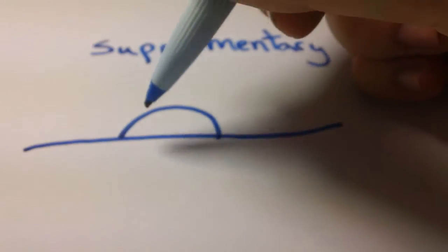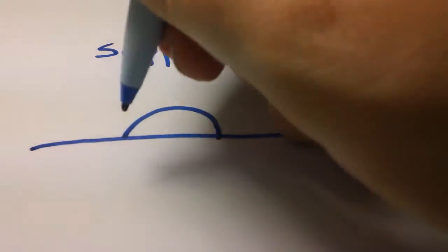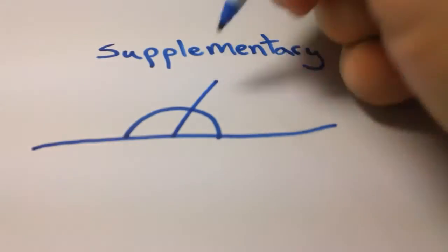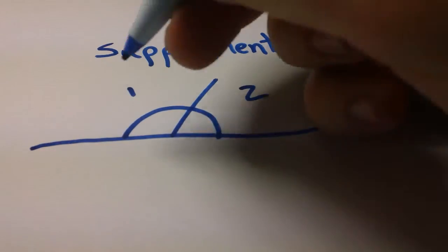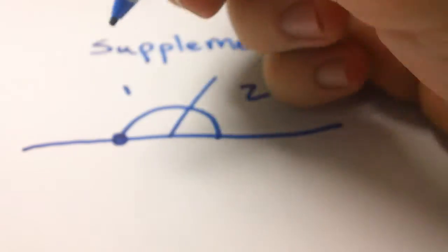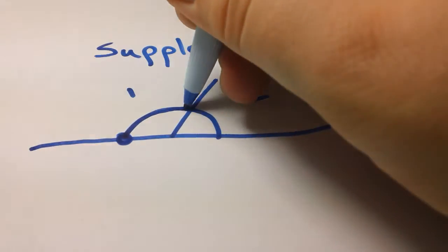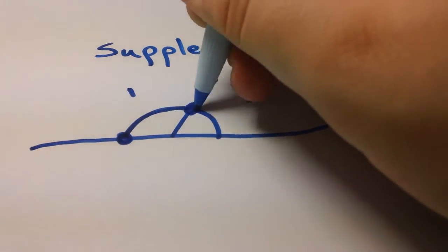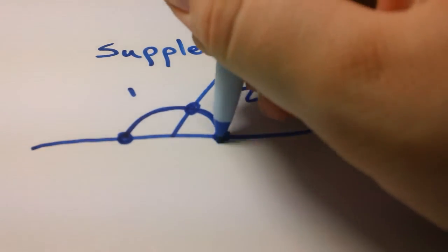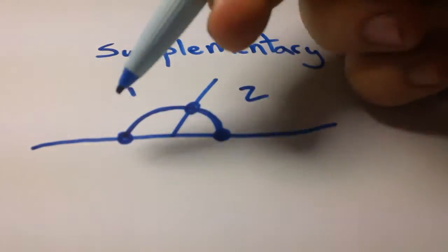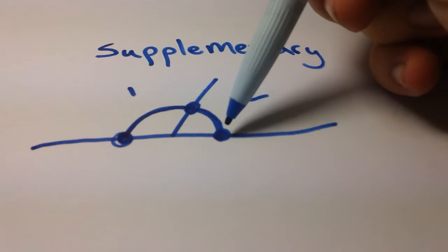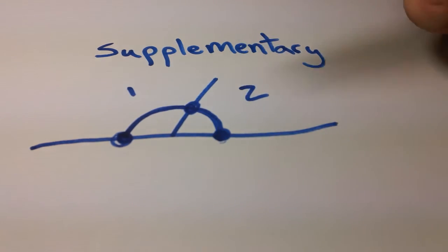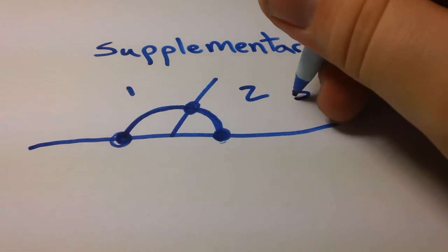But the way I always explain supplementary angles to my students is that if, let's say we have two angles in here, angle 1 and angle 2. I say if you can start with your first angle, and then turn into your second angle right here, and then end on the same line you began with, because like see we began on this line, went through angle 1, angle 2, and ended on that same line, then those two are supplementary.